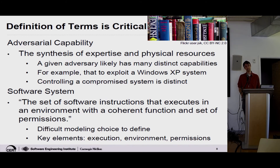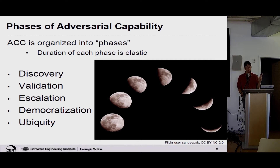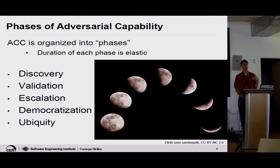What we did is organize this into phases — and there's a pretty picture of the moon for 'phases of the moon,' it's like a pun, but not actually a pun because a pun would be funnier. We have: discovery, validation, escalation, democratization, and ubiquity. You start with discovery and go through. You don't really have to see validation to know you're going to move into escalation. They pretty much go in order, but there are a couple of things that make this hard.